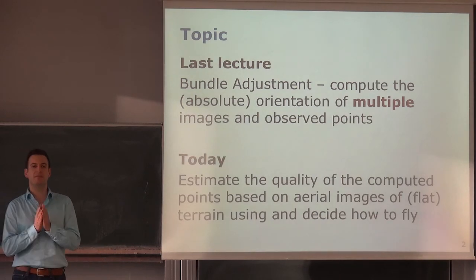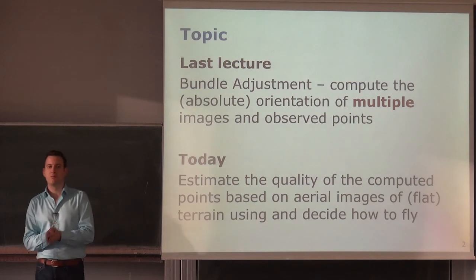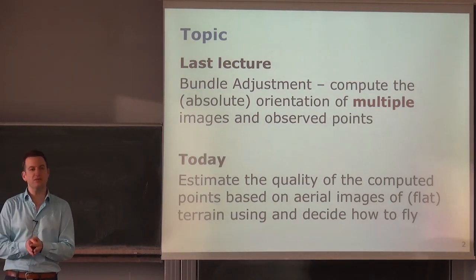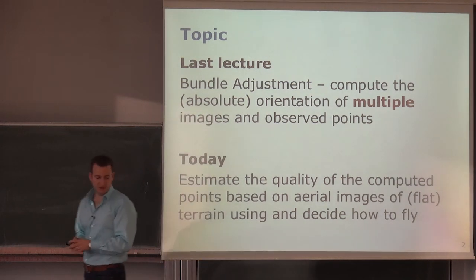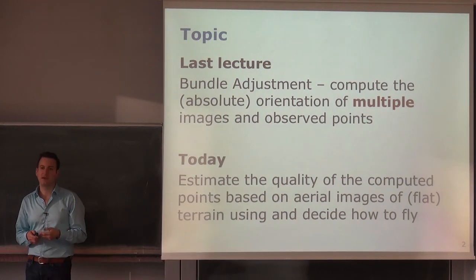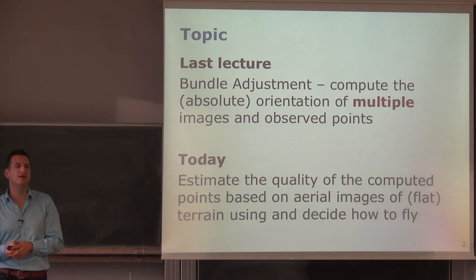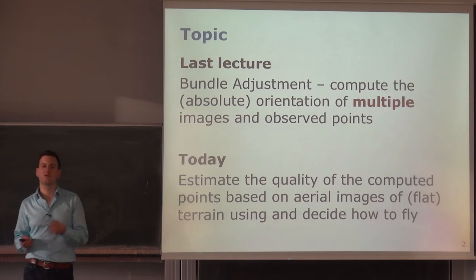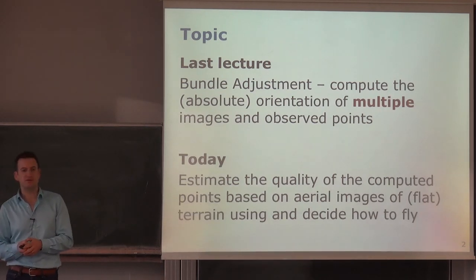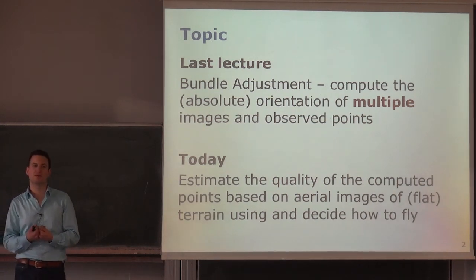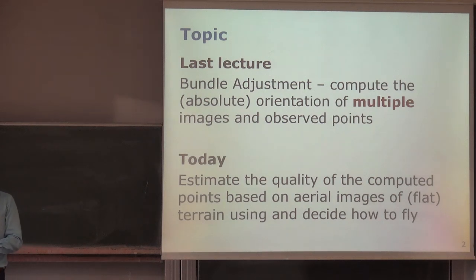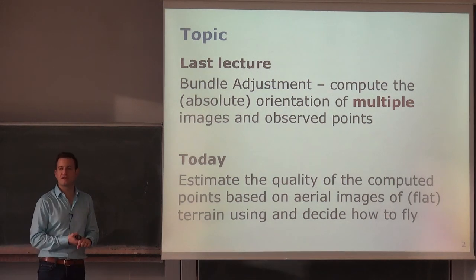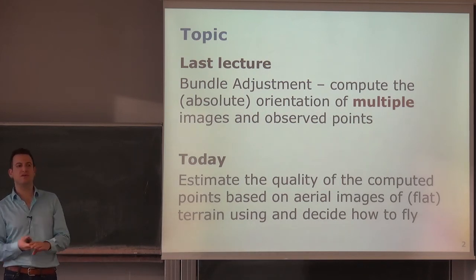Last week we looked into the bundle adjustment problem — how we can build models of the environment using images, estimating the location of 3D points and the location of our camera. Today we look at how we can estimate the quality of those points, which typically depends on the number of control points on the ground: points where I know the precise x, y, z location. These control points help fix the scale issue and relate our model to existing maps that use those known control points as a reference.